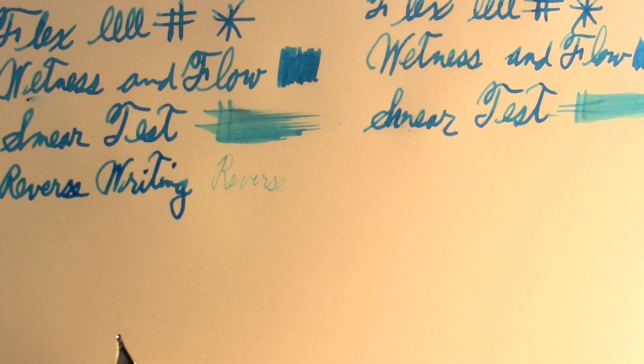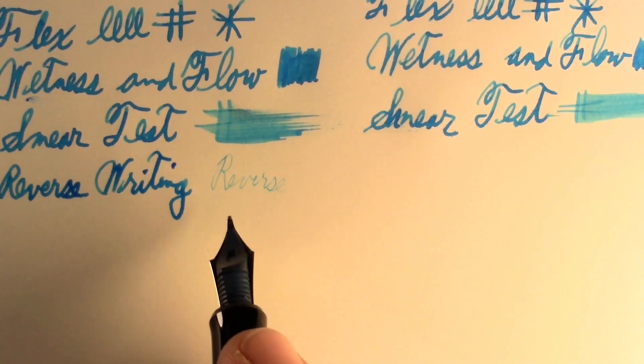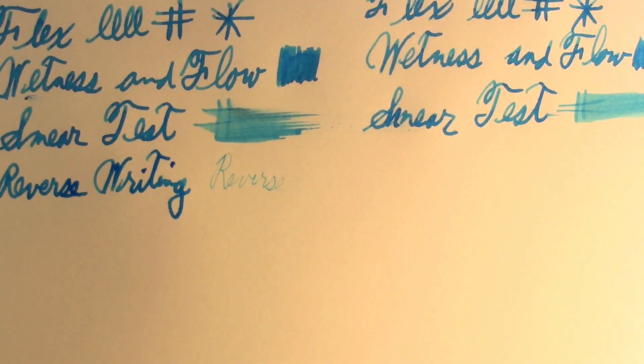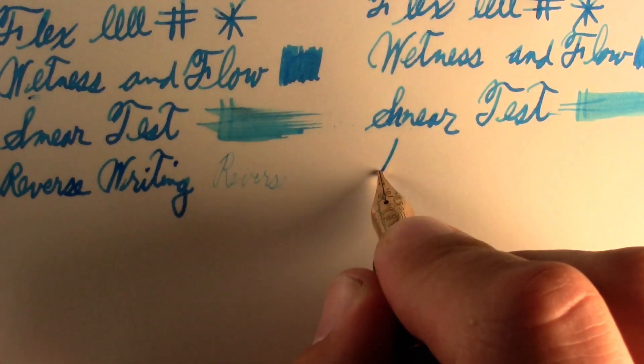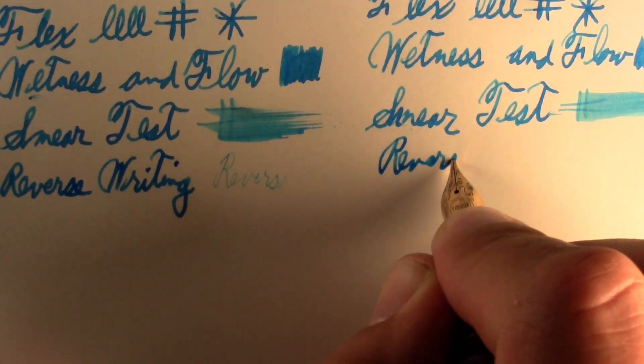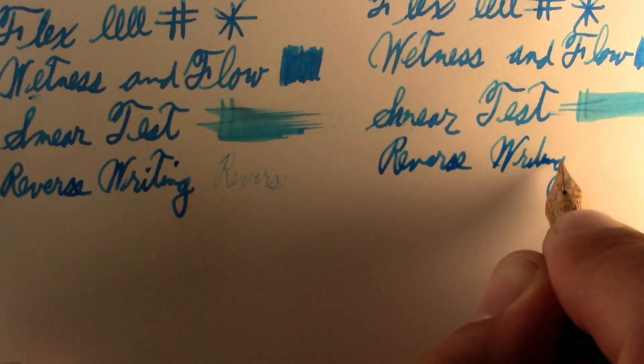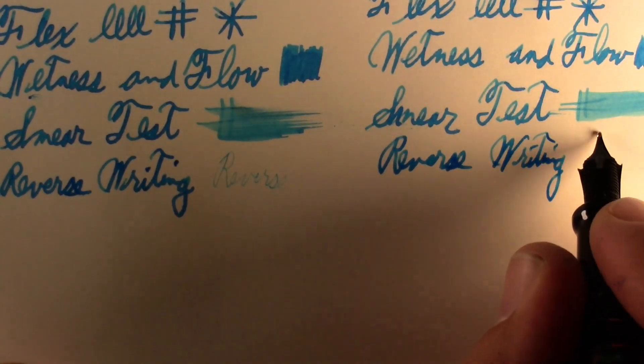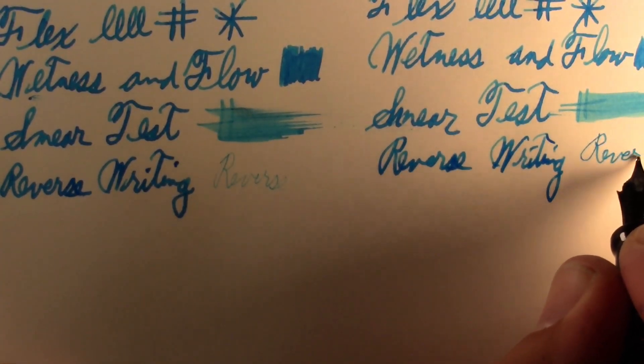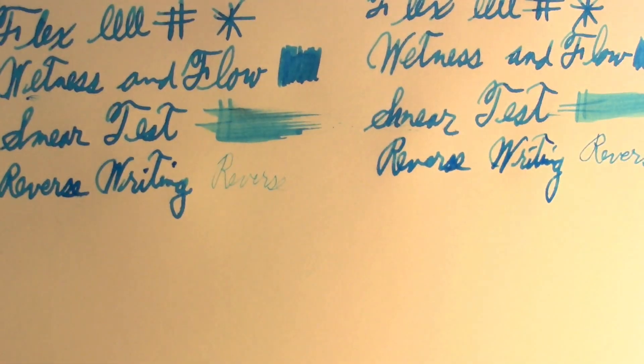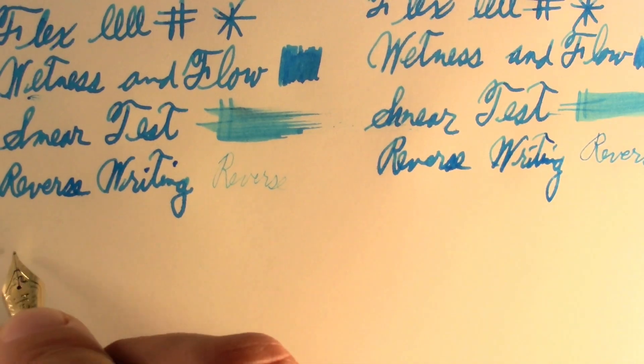Then we get to the reverse writing test. Okay, I said the other one was freak nasty, I take that back. That's freak nasty. That was horrible. And the Aurora 88, much better at reverse writing.